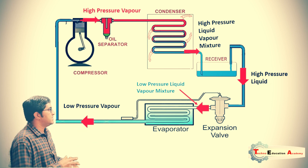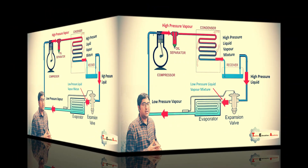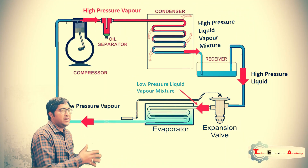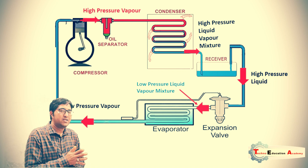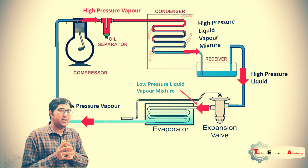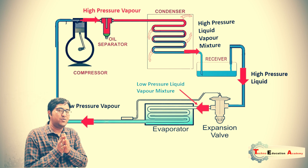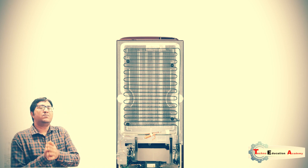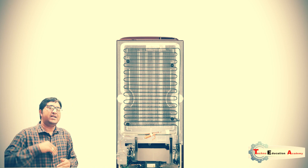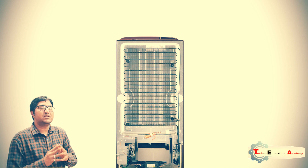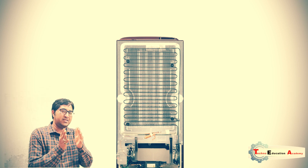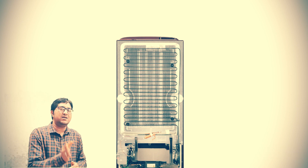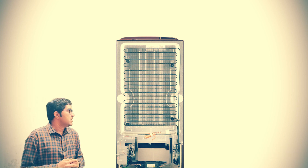This low pressure vapor is again supplied to the compressor, the pressure is increased, and the cycle is continuously repeated. This refrigerator works on the VCR cycle — Vapor Compression Refrigeration cycle. So I hope you understand why we maintain a gap between the refrigerator and the wall: because outside the refrigerator there is a condenser, and this condenser rejects heat to the surrounding through convection.